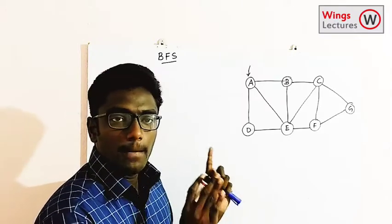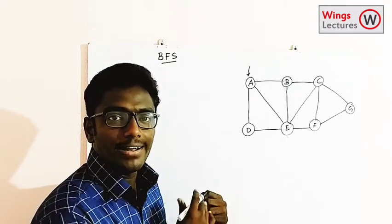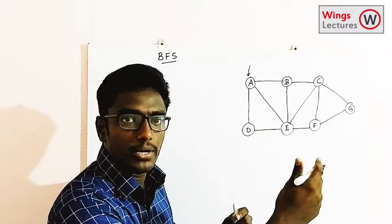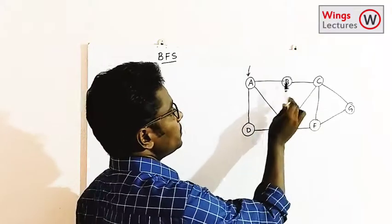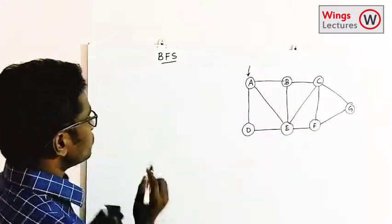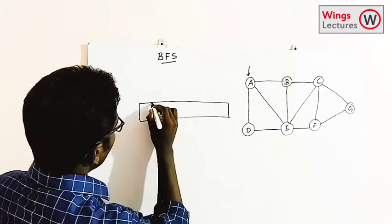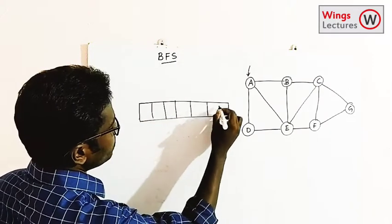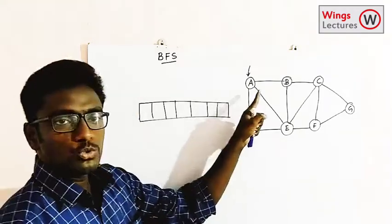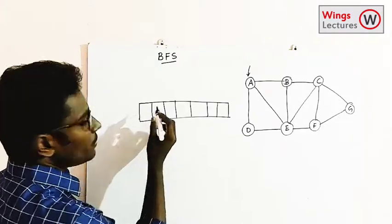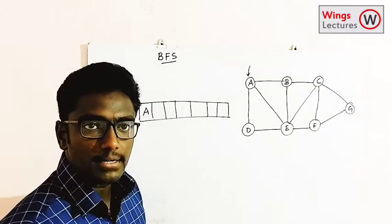BFS is based on the queue data structure, so we follow queue method for inserting and printing elements. First find out how many vertices there are — one, two, three, four, five, six, seven vertices. Make a queue and insert the starting vertex A into the queue.